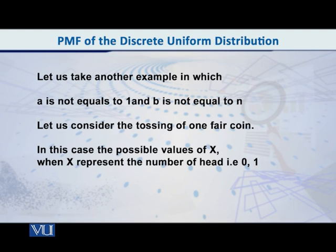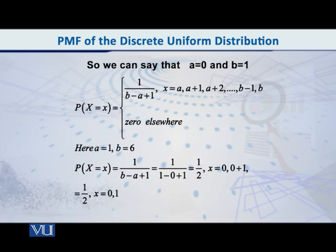And after this, another example, where a is 1 and b is not equal to n. We also see it. So, let us consider the tossing of one fair coin. In this case, what are the possible values of x? If x represents the number of heads, I think you will see very quickly that x can be either 0 or 1. Because if the tail comes, then the number of heads is 0. And if the head comes, then the number of heads is 1. So, if we want to match with this formula, then we can say that a is equal to 0 and b is equal to 1? Of course we can.